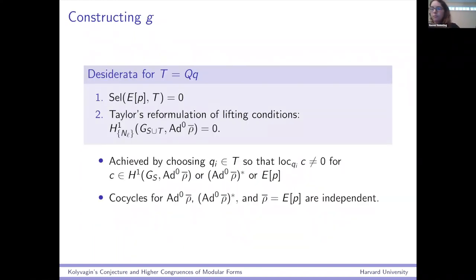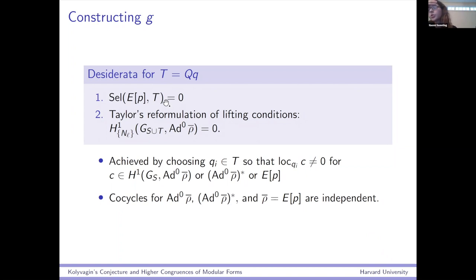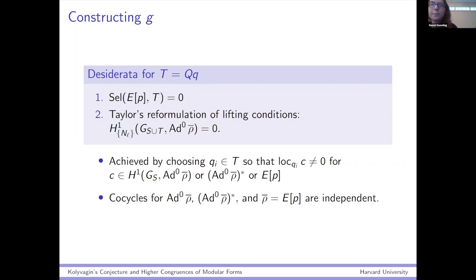To summarize, here's what it boils down to — what we really need to require of our level raising set. Let T be Q·q. The first thing is that the Selmer group depending on E and on T should vanish. Richard Taylor reformulated those two lifting conditions as just saying that this Selmer group vanishes, using that the local conditions at L have the right dimensions. So we have two Selmer groups that we want to make zero by putting primes into T. There's a very general way to bump down Selmer groups: you add primes into T which make certain classes non-zero — classes in ad^0(ρ̄) or in the P-torsion of E. You just have to check that you can do this consistently so that the cocycles you want to make not vanish locally are independent — but that's not hard because these are all irreducible representations of different dimensions, at least when the image is large.